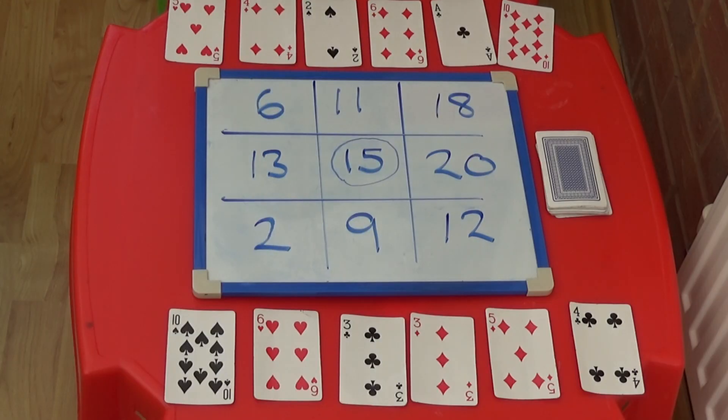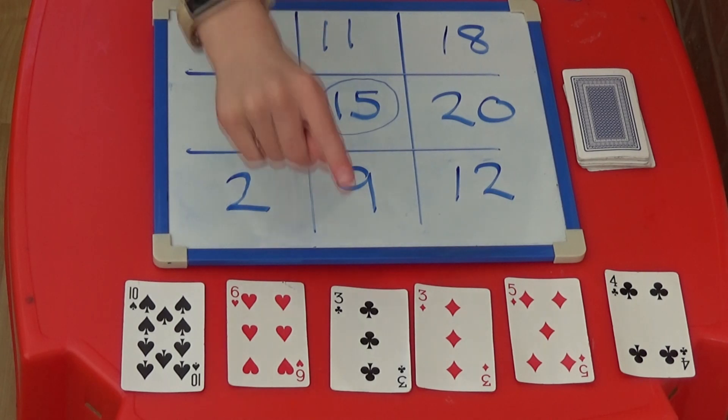The other player then has their go. They can decide to make 18. They have 6 and 3. 6 multiplied by 3 is 18.